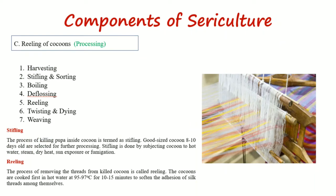Processing of cocoons is performed in various steps. First is harvesting — collecting the cocoons spun by the silkworm larvae. Next is stifling, which is killing the pupa inside the cocoon. Sorting means selecting good-sized cocoons that are 8 to 10 days old for further processing. Stifling can be done using hot water, steam, dry heat, exposure to sun, or fumigation.